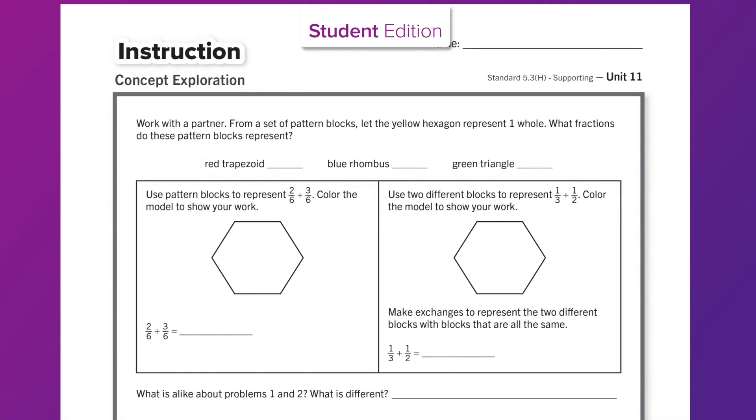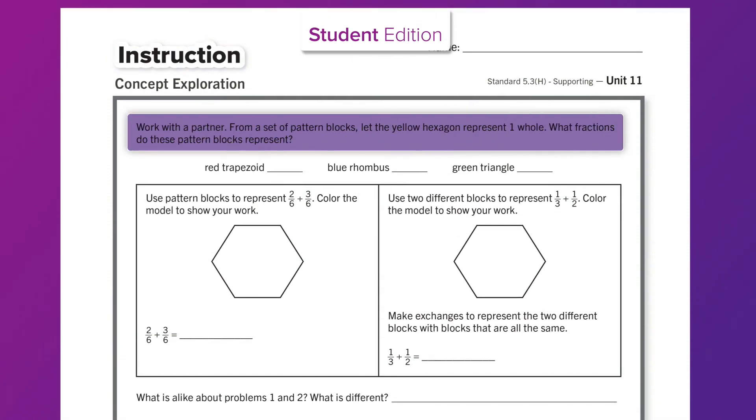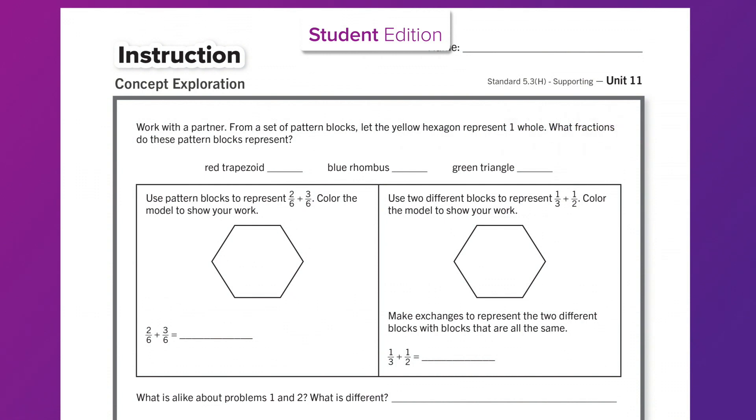In Level 5, Unit 11, students work with a partner to complete the concept exploration page in the Student Edition. In this activity, students are told that a yellow hexagon represents one whole. A student walks through the task on the page. They determine what fractional piece the red trapezoid, blue rhombus, and green triangle represent.